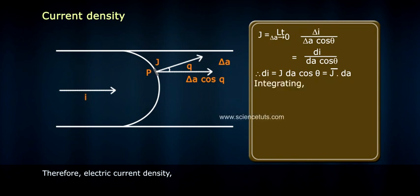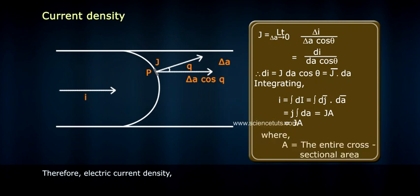Integrating, I = ∫dI = ∫J⃗·dA⃗ = J∫dA = JA, where A equals the entire cross-sectional area.